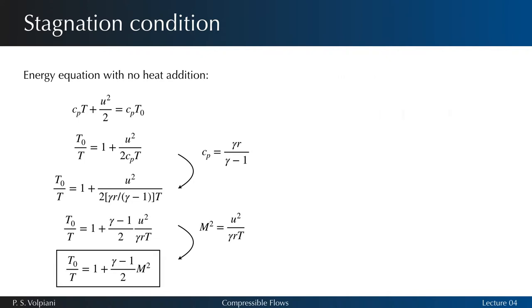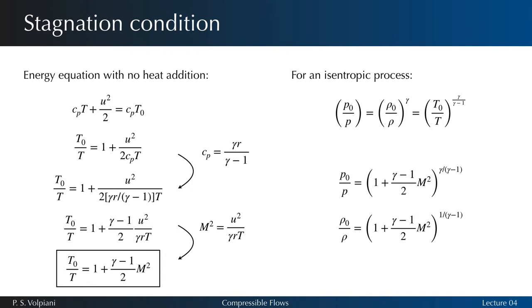Furthermore, for an isentropic process the following equations hold. In general, if the flow field is isentropic throughout, the stagnation properties are constant at every point in the flow and then we have the following relations.